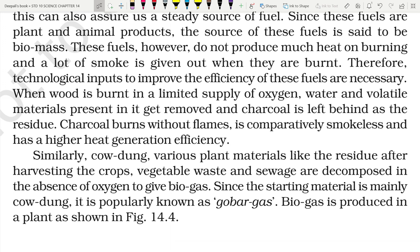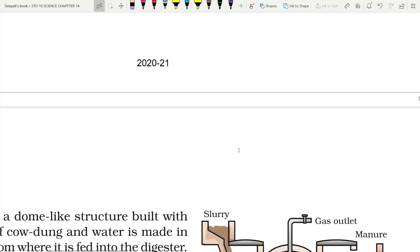When wood is burned in a limited supply of oxygen, water and volatile material present in it are removed, and charcoal is left behind as residue. Charcoal burns without flame, is comparatively smokeless, and has higher heat generation efficiency. Similarly, cowdung and various plant materials — like crop residues, vegetable waste, and sewage — are decomposed in the absence of oxygen to give biogas. Since the starting material is mainly cowdung, it is popularly known as gobar gas.